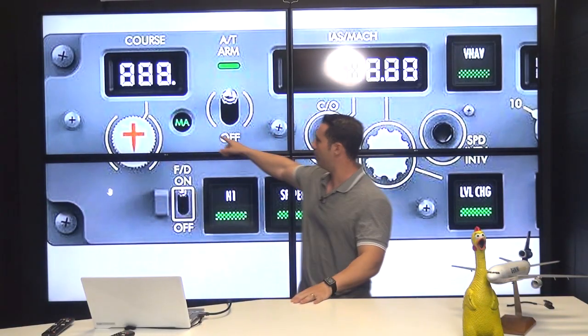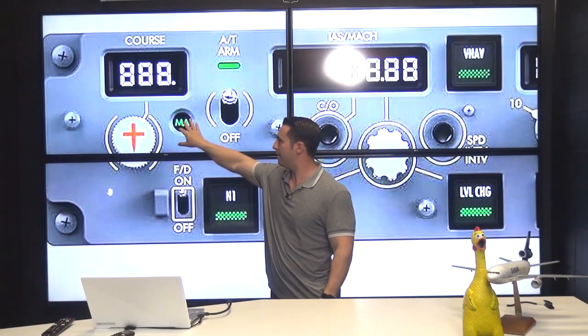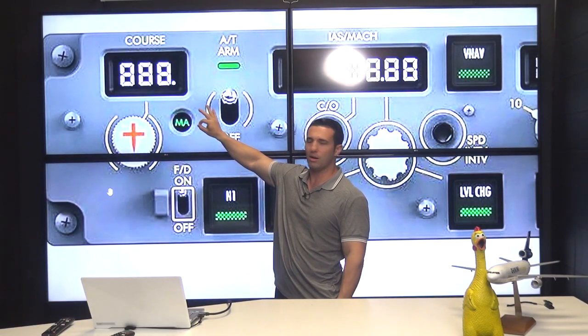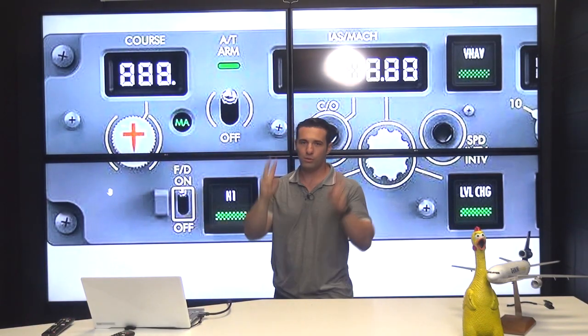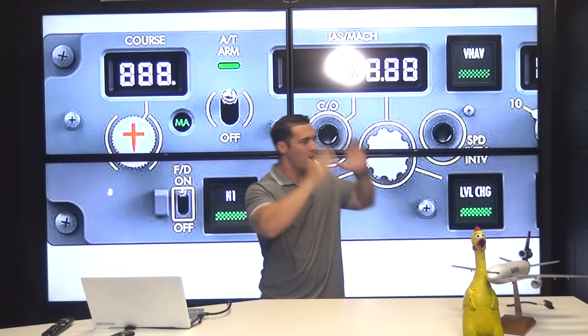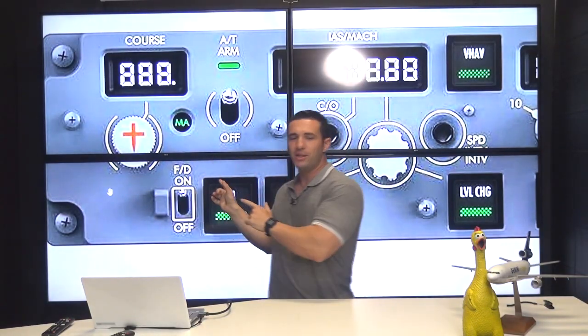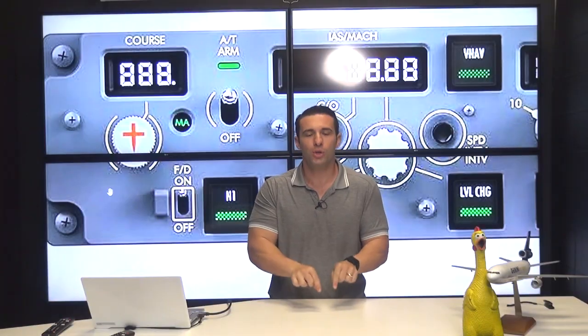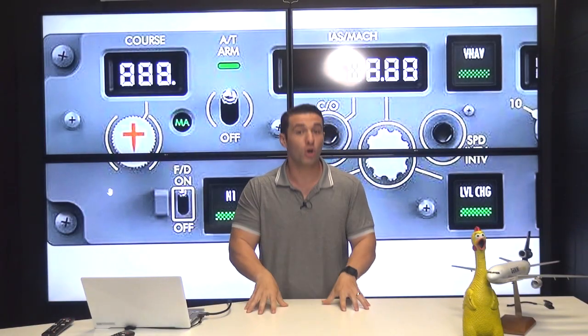Here's the master over here. You'll notice there's a green MA that's illuminated and that light comes on when we put the flight director on. There's two flight director switches, one on the captain's side, one on the first officer's side.